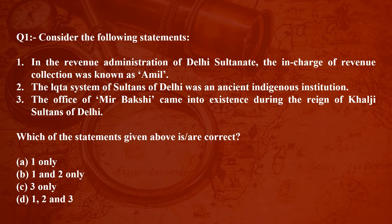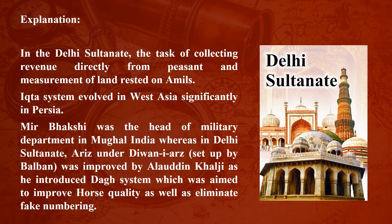The answer to this question is Option A — statement one is correct. In the Delhi Sultanate, the task of collecting revenue directly from peasants and measurement of land rested on Amels. The Iqta system evolved in West Asia, significantly in Persia. Mir Bakshi was the head of the military department in Mughal India. In Delhi Sultanate, the Arz department under Diwan-i-Arz, set up by Balban, was improved by Alauddin Khilji, who introduced the Dagh system to improve horse quality and eliminate fake numbering.